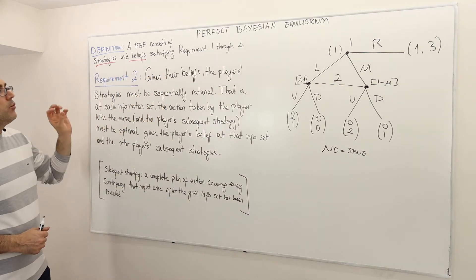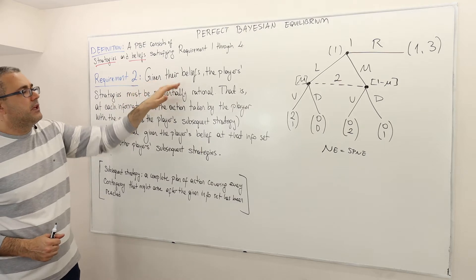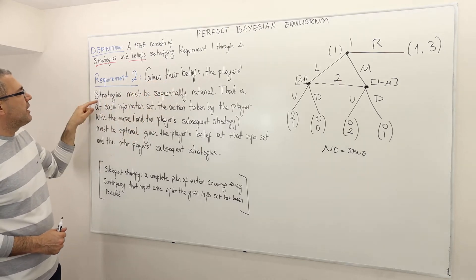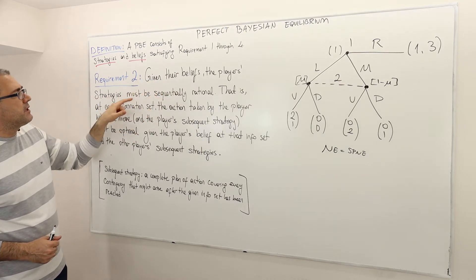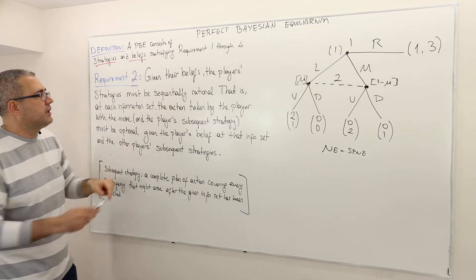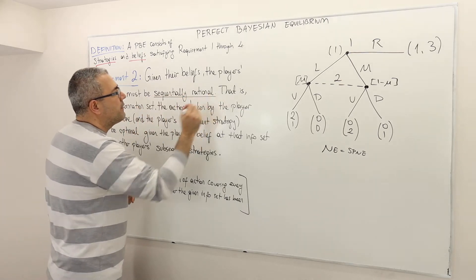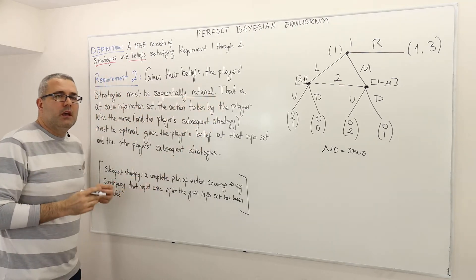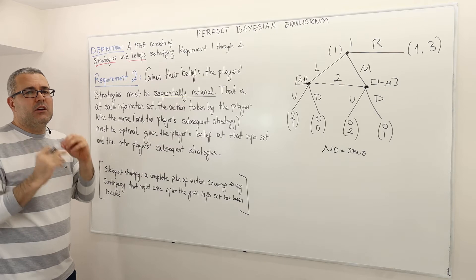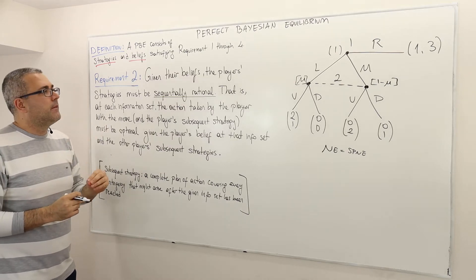Requirement two. What does it say? Given their beliefs, the player's strategies must be sequentially rational. So requirement two imposes an idea of sequential rationality.